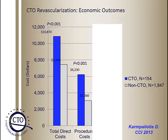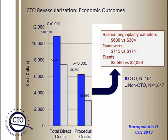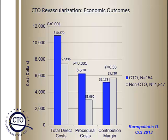A common concern administrators have is procedural cost. It is true that CTO interventions have higher cost than non-CTO interventions, requiring more guide wires, more balloons, and more stents. However, a study from Dimitri Carballotti showed that the contribution margin was similar for CTO and non-CTO interventions, demonstrating that CTO interventions can be a non-money-losing proposition and actually provide profit.